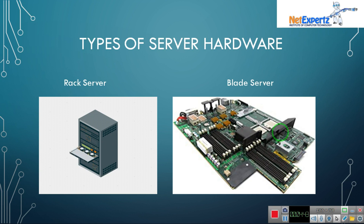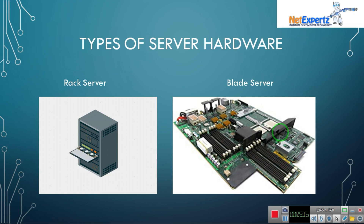For that reason, we need server hardware. The difference between a desktop or laptop working as a server versus dedicated server hardware is the hardware configuration. In a desktop, we can place a maximum of one processor. In a desktop or laptop, we can place a maximum of 32 GB of RAM. But in server hardware — rack server or blade server — we can place up to 64 processors in one server.